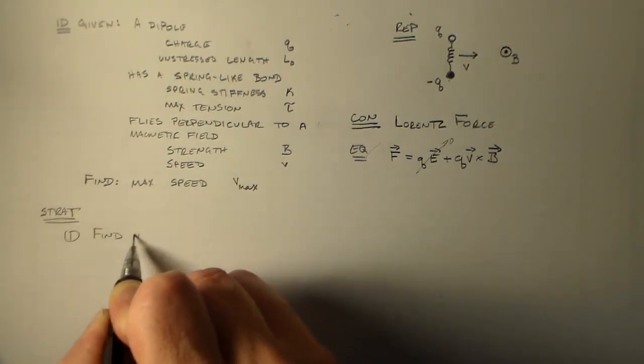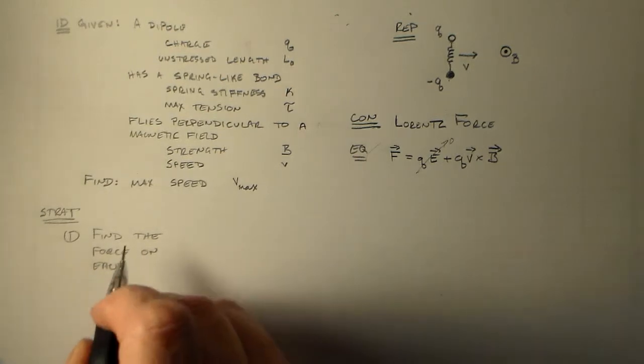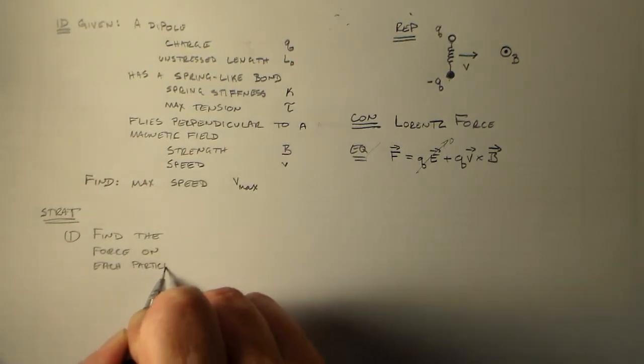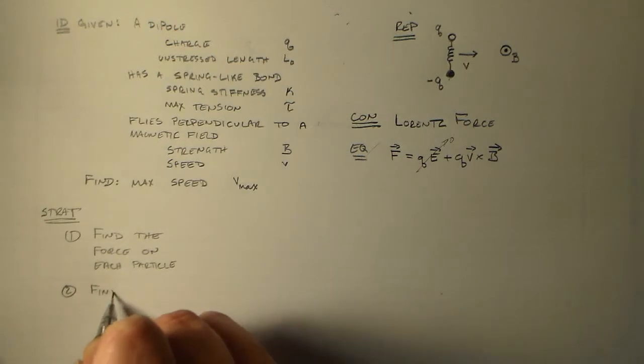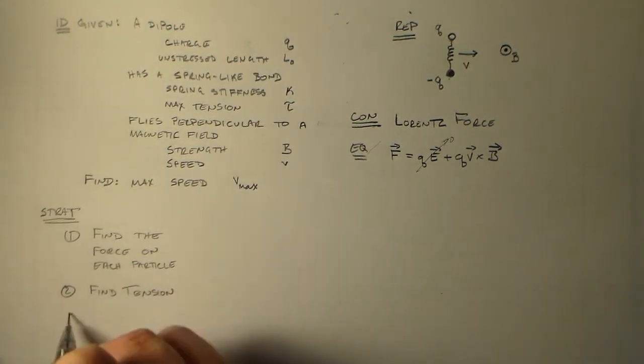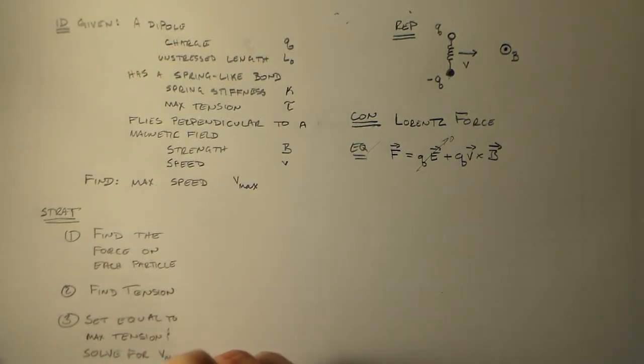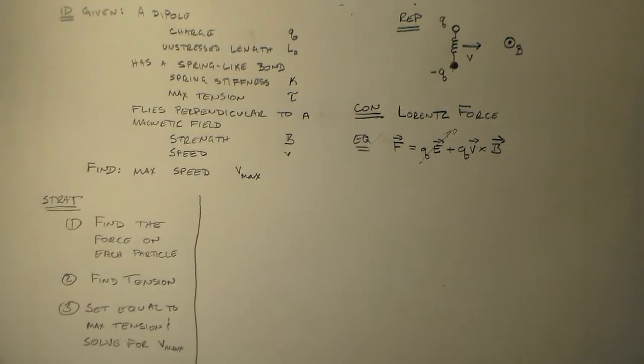So we'll find the magnetic force on each particle, on each ball, on each whatever those things are. And then we'll find the tension. That's really just a sum, right? Then we'll set it equal to maximum tension and solve for V. That's all we really have to do. It's not going to be the world's most complicated, difficult problem. They don't all have to be.